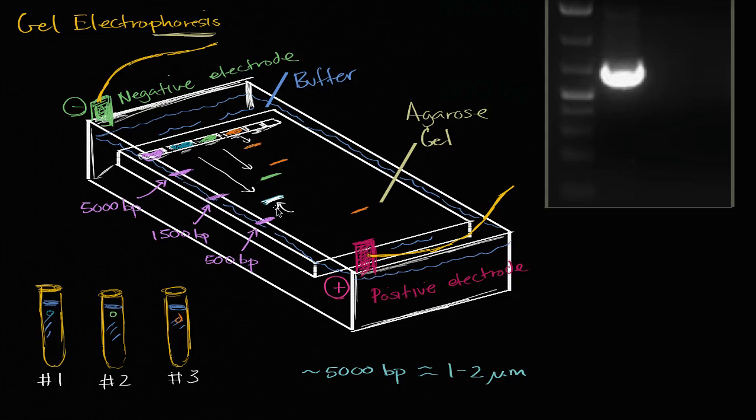So this is many, many molecules of DNA migrating that far. And they would have to be that small to be able to migrate through that polysaccharide gel.